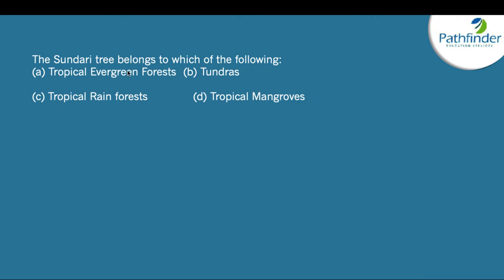The first question: the Sundari tree belongs to which of the following — tropical evergreen forests, tundras, tropical rainforests, or tropical mangroves? The correct answer is tropical mangroves. Mangroves are trees and shrubs found in coastal regions that grow in saltwater. In India, you will find mangroves in the Sundarbans, near Ratnagiri, and near Goa.